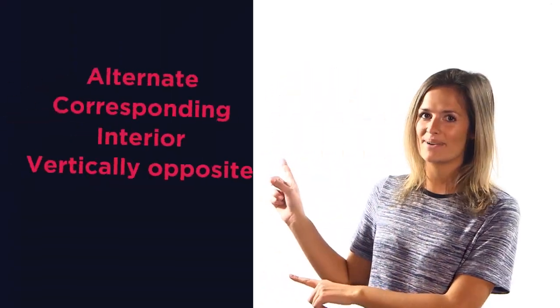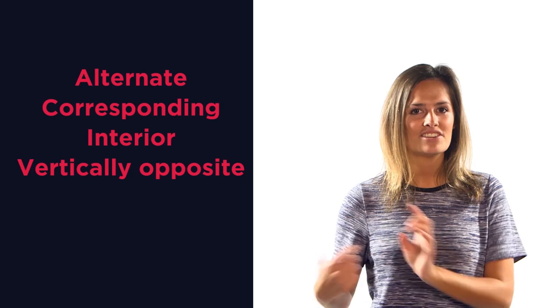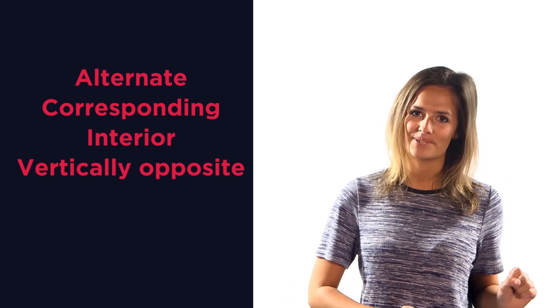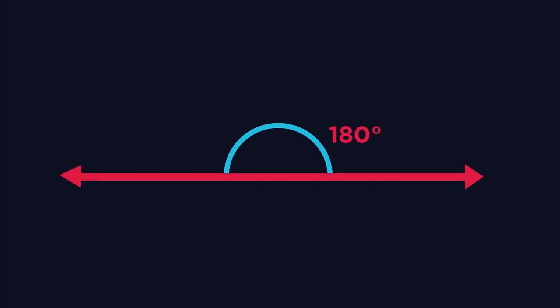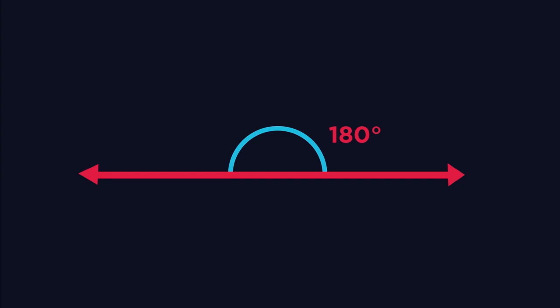In this video, we're going to discover what these key words mean and we're going to use them to find missing angles. Before we start, you should already know that there are 180 degrees in a straight line. That's a key piece of knowledge that we use when solving parallel line angle questions.